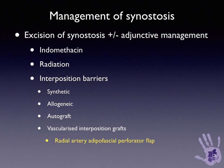The management of synostosis to regain forearm motion involves excision of the synostosis, after which an adjunct can be used to try and reduce recurrence rate. Indomethacin has been described, as has radiation, but these are currently out of favour.